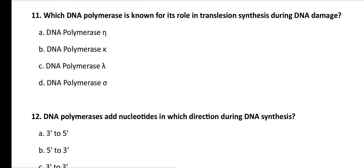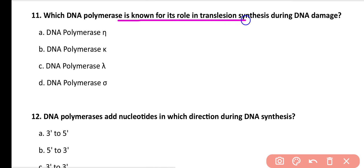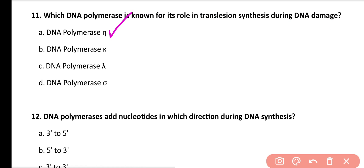Question number 11. Which DNA polymerase is known for its role in translesion synthesis during DNA damage? DNA polymerase Zeta, DNA polymerase K, DNA polymerase Gamma, or DNA polymerase Sigma? Correct answer is option A. DNA polymerase Zeta is responsible for translesion synthesis, in which the effect of mutations is reversed.